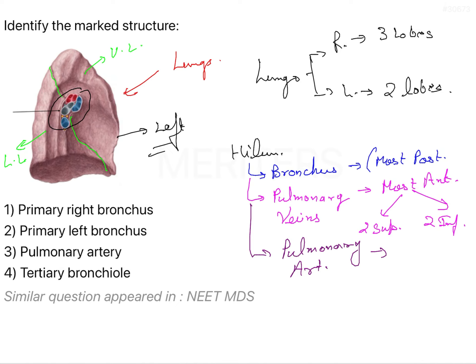To make it simpler: bronchus will be most superiorly situated, then we have your pulmonary artery, and finally most inferiorly we are going to have your pulmonary veins. So these are the things which you have to remember.